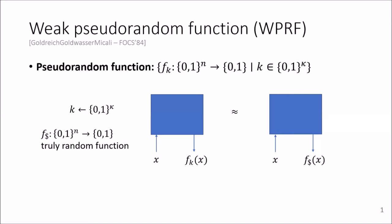So let's start at the beginning. Recall that a pseudorandom function is a keyed function that looks like a truly random function. A weak pseudorandom function is that we require security only to hold for random inputs instead of chosen inputs.